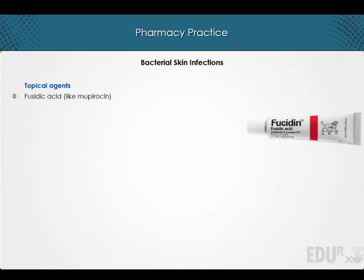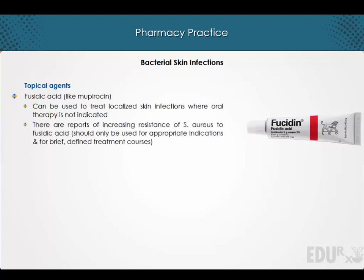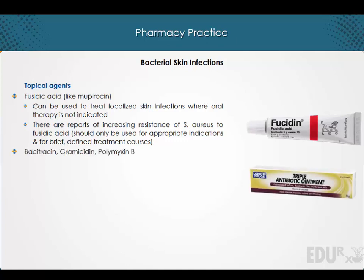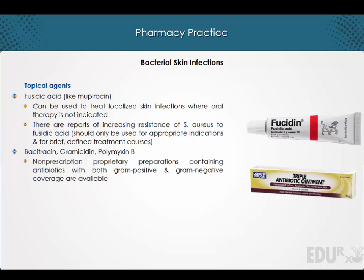Fusidic acid, similar to Mupirocin, can be used to treat localized skin infections where oral therapy is not indicated. However, there are reports of increasing resistance of Staphylococcus aureus to fusidic acid, and therefore it should only be used for appropriate indications and for brief, defined treatment courses. Numerous non-prescription proprietary preparations containing antibiotics such as bacitracin, gramicidin, and polymyxin B with both gram-positive and gram-negative coverage are available.